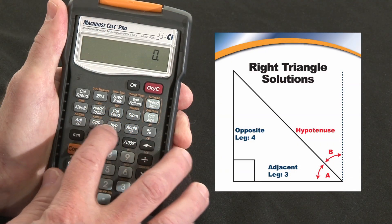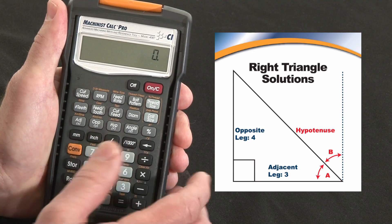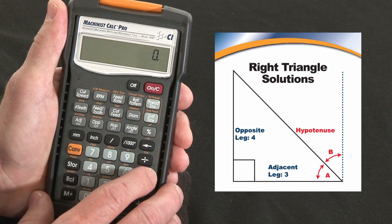Now let me show you the right angle solution keys built into your Machinist Calc Pro. These keys will give you quick right angle solutions for sine bars or any kind of right triangle needs. All you've got to do is enter any two and you can solve for all the rest.